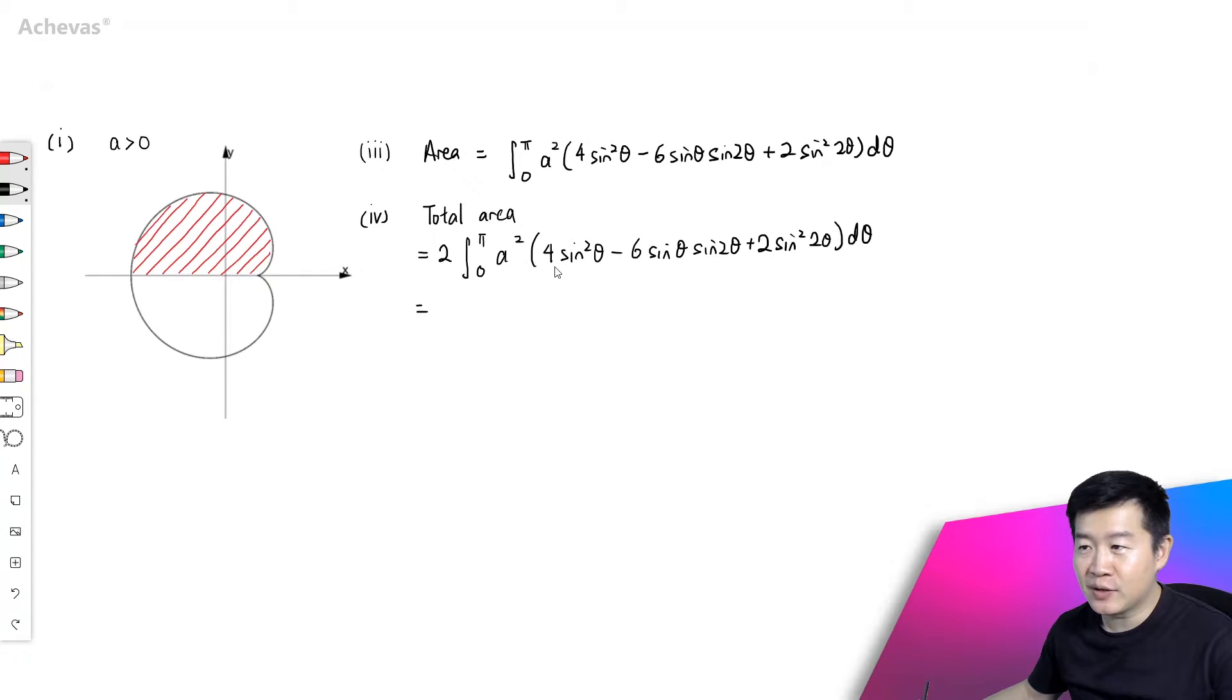Let's factorize out 2a². So combining with this will give me 4a² integrating from 0 to π of 2sin²θ minus 3sinθ sine 2θ plus sin²2θ dθ.